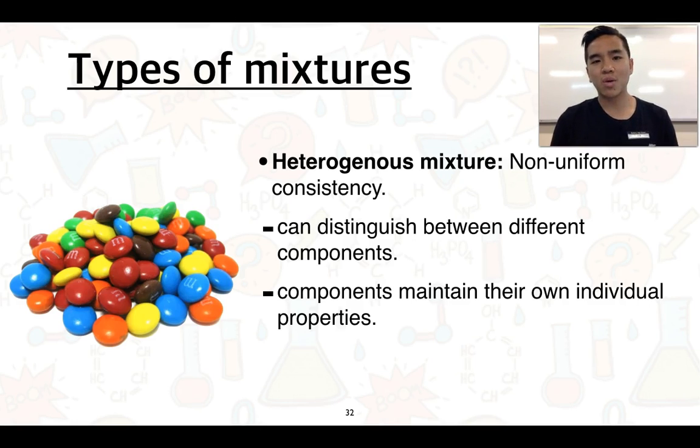The opposite of this is what we call a heterogeneous mixture. Hetero means different or opposite, and genus means phase or state. This has a non-uniform consistency, meaning we can actually distinguish between the different components quite readily. It also makes it quite easy for us to separate those different components because each of those components will retain the individual characteristics quite well. We've got an image of some colored M&Ms here to represent a heterogeneous mixture, and we could easily just separate the different colored M&Ms from one another.